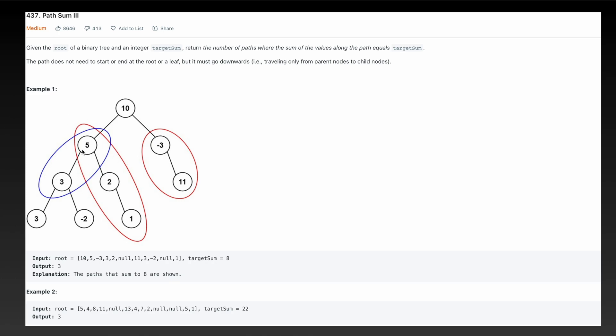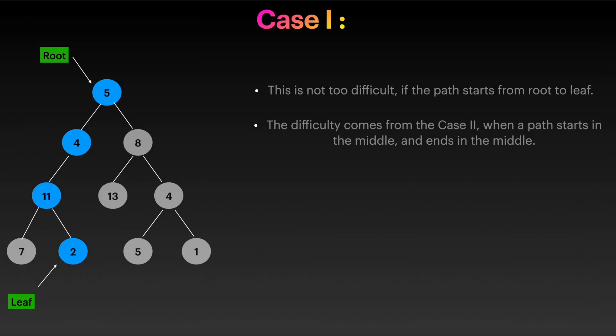This problem seems slightly similar, but there's a key difference. If you look at this example, we have the path 5→3, and notice that 5 is not the root node and 3 is not the leaf node. So in this problem, the starting node is not necessarily the root node and the ending node is not necessarily the leaf node, which makes it a little more complicated.